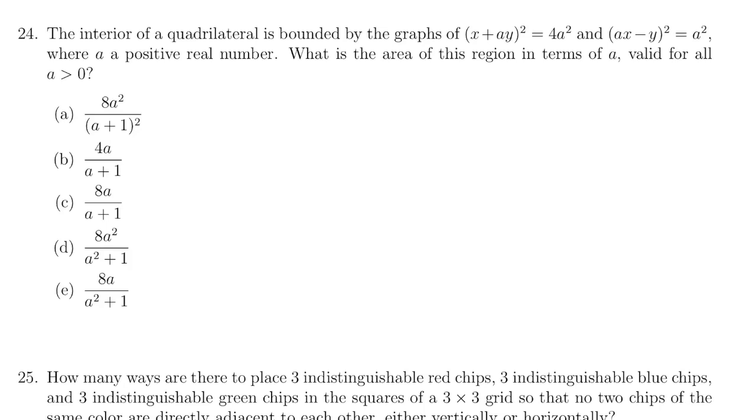Question 24. It suffices to deal with the case when a is 2. Because when a is 2, the five options all have different values. Which are 32 over 9. And then 8 over 3. 16 over 3. 32 over 5. And 16 over 5, respectively.